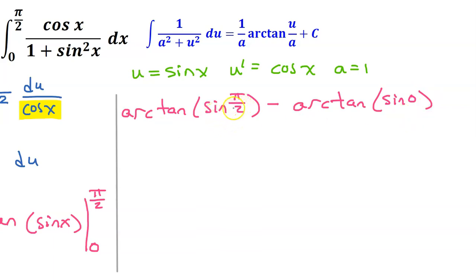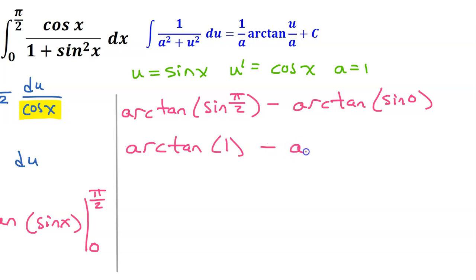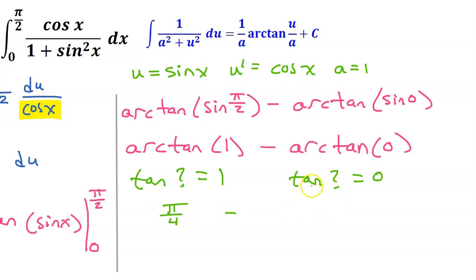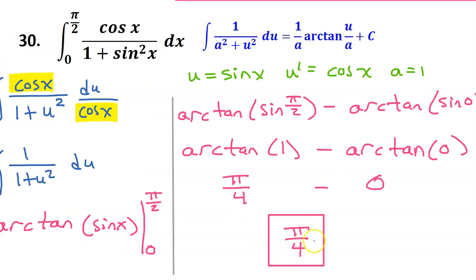What is sin(π/2)? That's at the very top of the unit circle, where the y value is 1. So that gives us arctangent(1). And sin(0) = 0. To evaluate: tangent of what angle equals 1? tan(π/4) = 1, so that value is π/4. Tangent of what angle equals 0? tan(0) = 0. So π/4 − 0 = π/4 is the final answer for number 30.